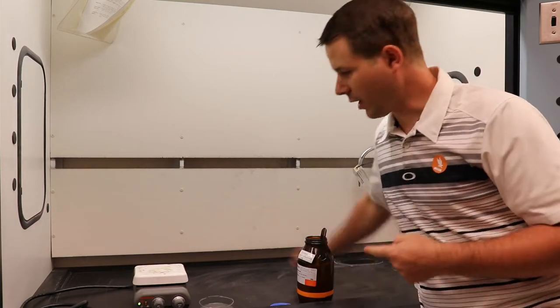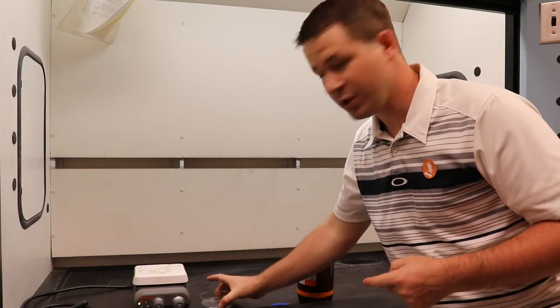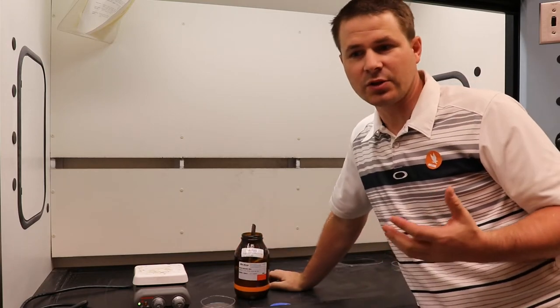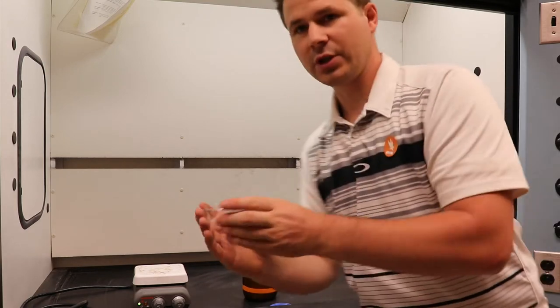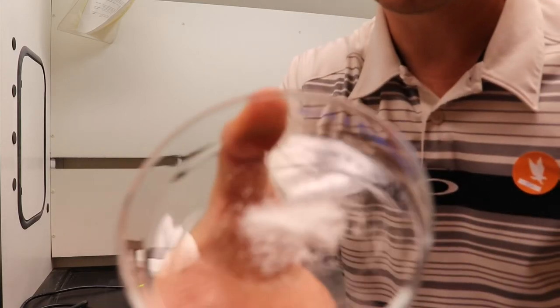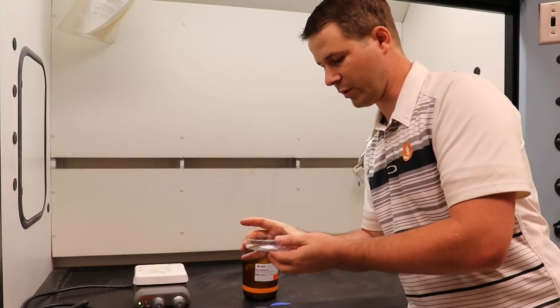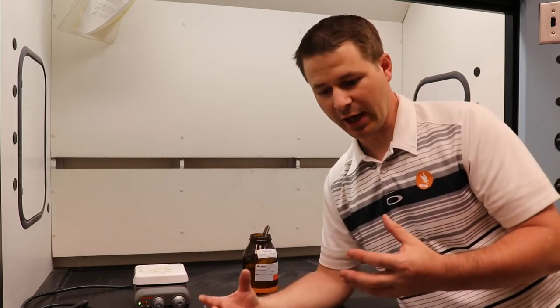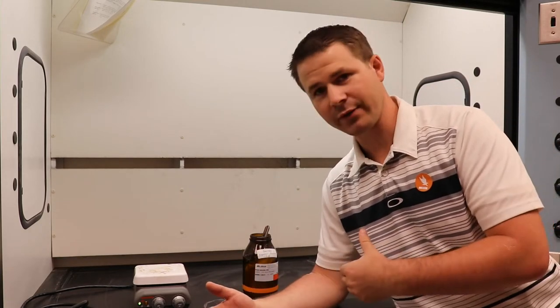So I've got this set up here. I've got a hot plate, petri dish, and phenyl salicylate, which is a solid crystal. You can see it looks a lot like sugar, but it has a very low melting point. So we're gonna put that on the hot plate, let it melt, we're gonna get a bunch of it in there, and once it's completely melted, we're gonna take it off the hot plate.